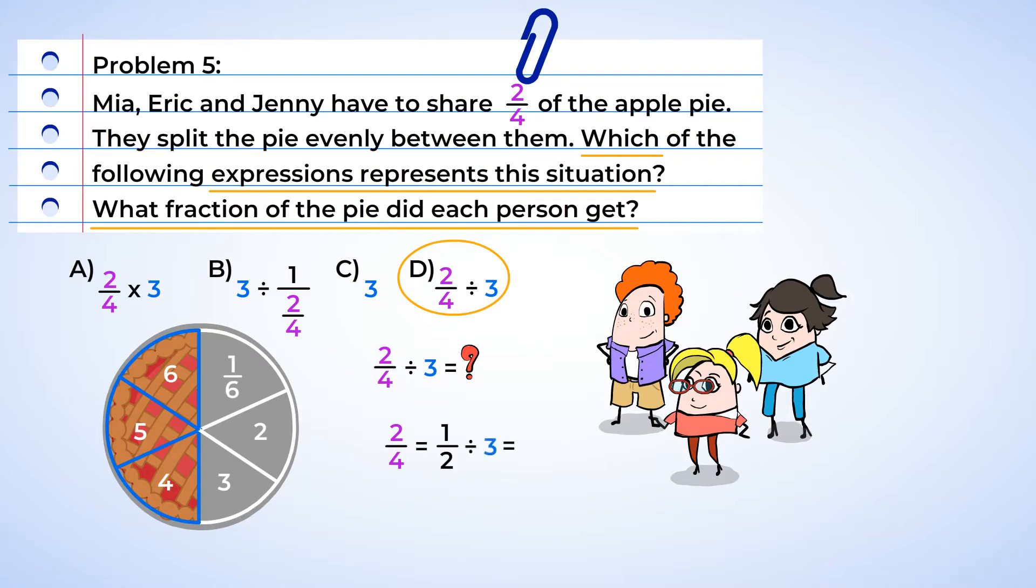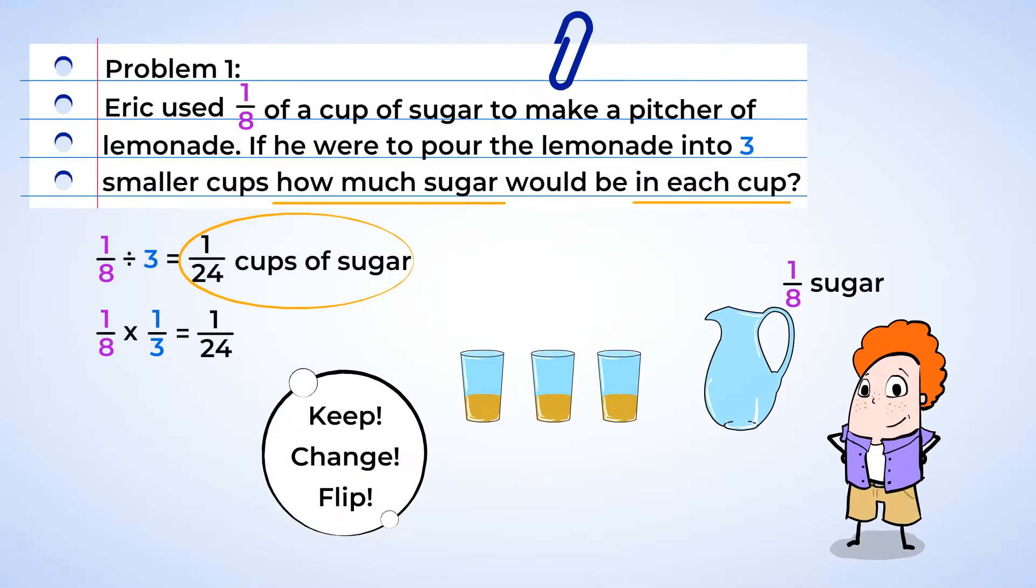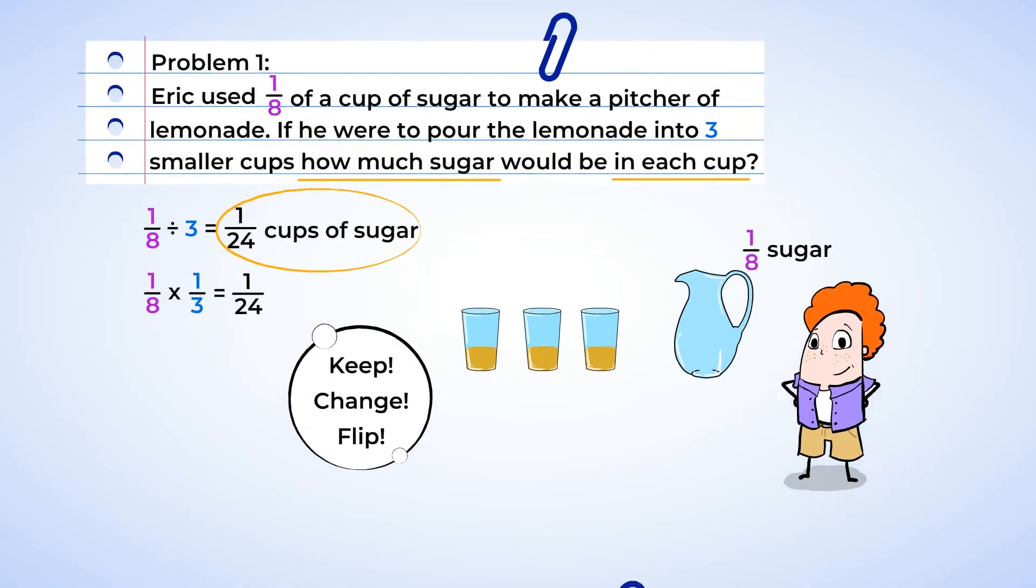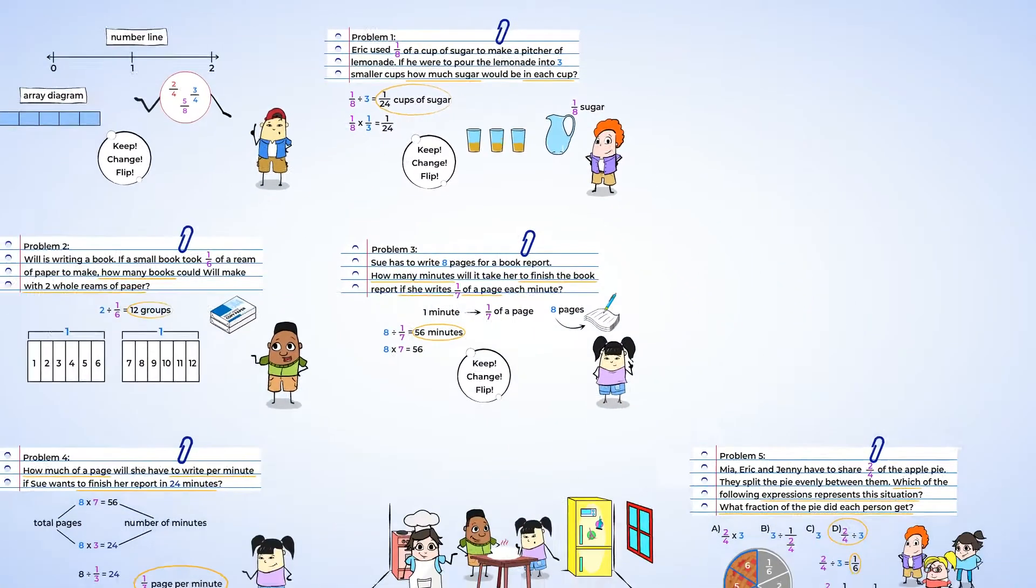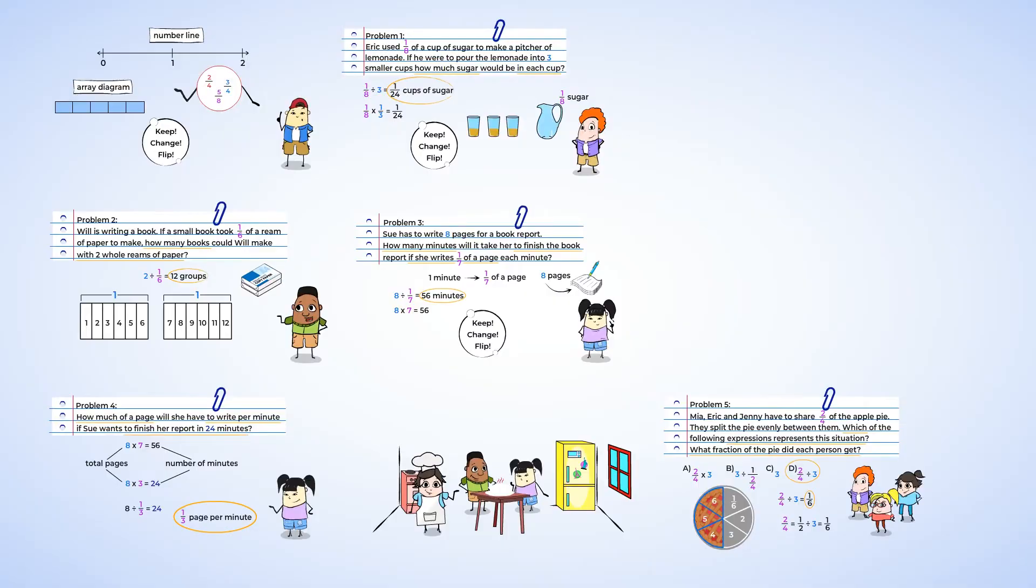Awesome. So one-half divided by three equals one-sixth. And now we know that Mia, Eric, and Jenny will get one-sixth of the apple pie each. Great work today. We helped our friends solve division problems that included fractions. Time to take a break and enjoy some of Eric's lemonade. See you next time.